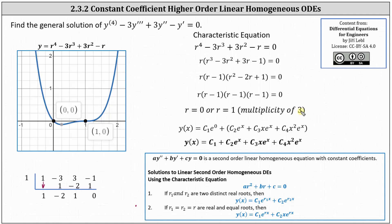So if we go back to what we know about second order constant coefficient linear homogeneous differential equations, if we have two real equal roots, the general solution was y of x equals c sub one times e to the power of rx plus c sub two times x times e to the power of rx. For our general solution, using the root of zero we have c sub one times e to the zero, and because the root of one has multiplicity of three, we have c sub two times e to the x, plus c sub three times x e to the x, plus c sub four times x squared e to the x. Simplifying, the general solution is y of x equals c sub one plus c sub two e to the x plus c sub three x e to the x plus c sub four x squared e to the x.